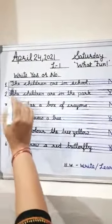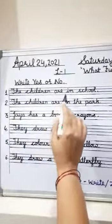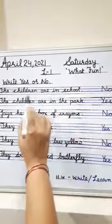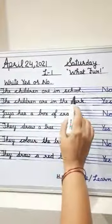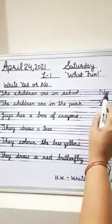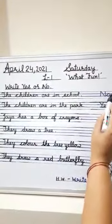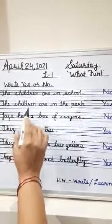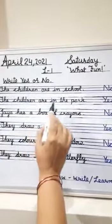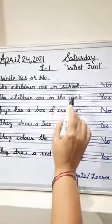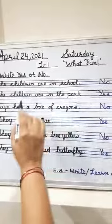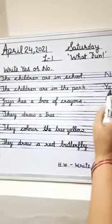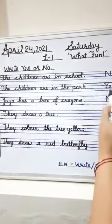Number 1: The children are in school. Kya bachche school mein hain? No. Hum no write karenge. Number 2: The children are in the park. Kya bachche park mein hain? Toh hum yes write karenge.